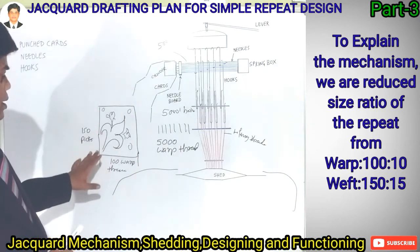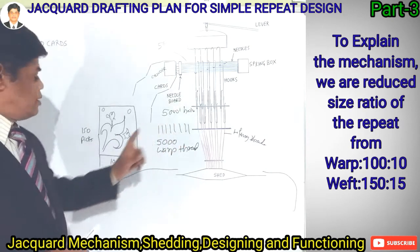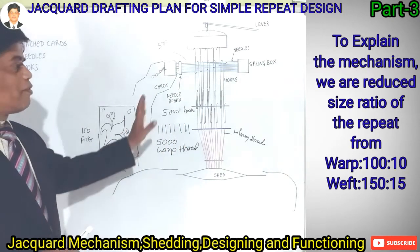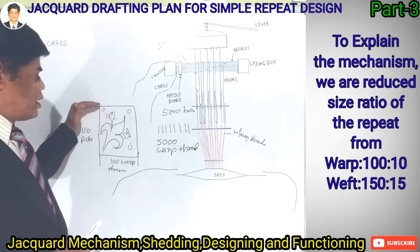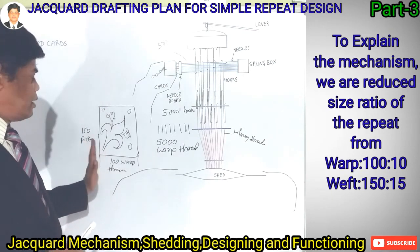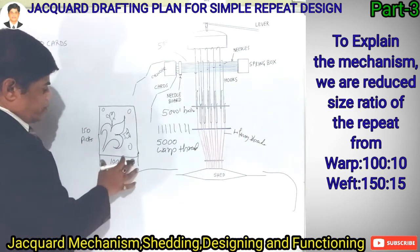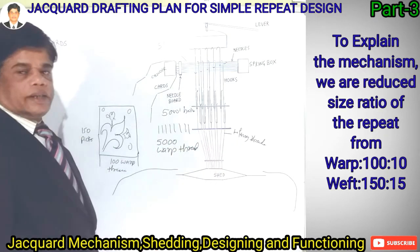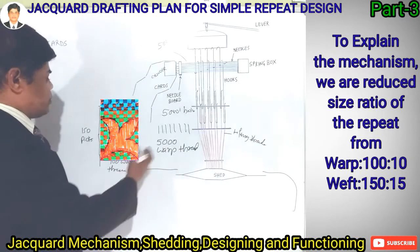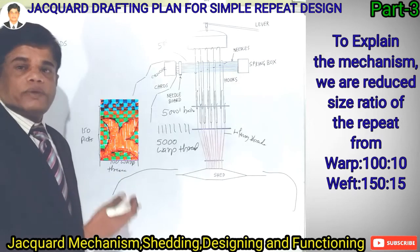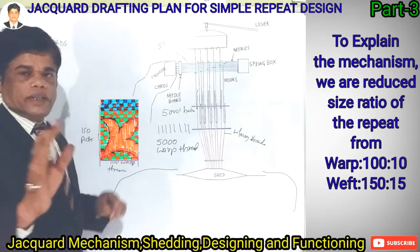To achieve this one repeat, how many hooks are required? Only 100 hooks are needed — not 5,000 hooks. For one repeat, 100 warp threads are used. Out of 5,000 total threads, for each group of 100, one repeat design is accommodated. For more complicated designs, 100, 200, or sometimes even 1,000 hooks may be required to lift.